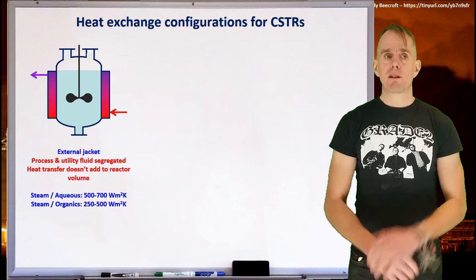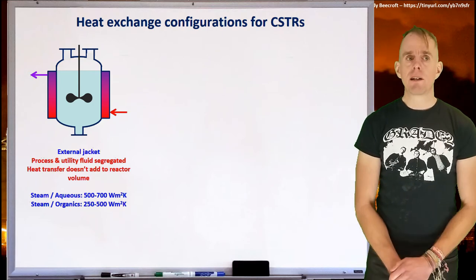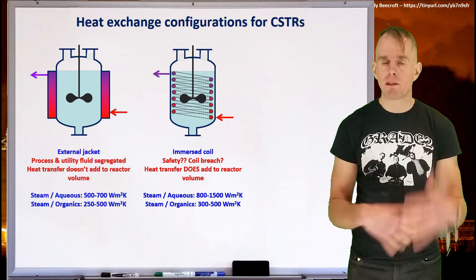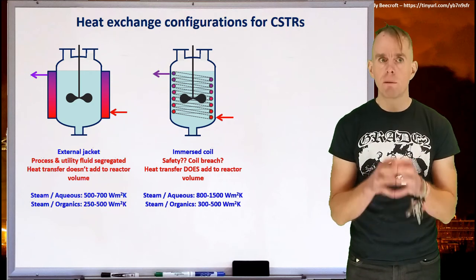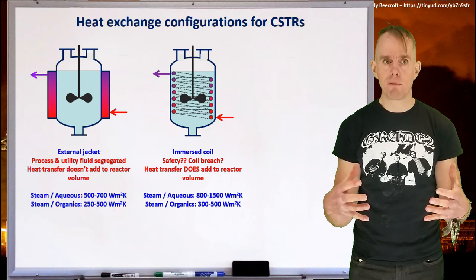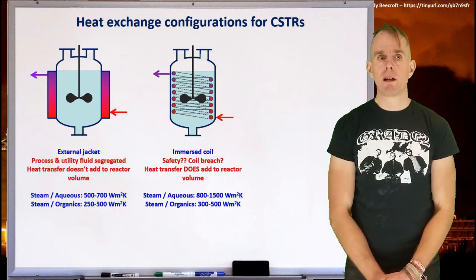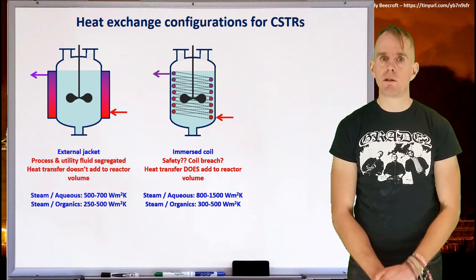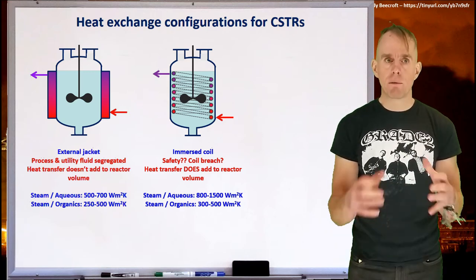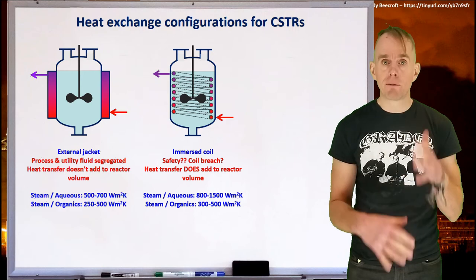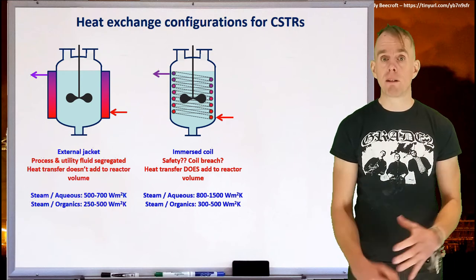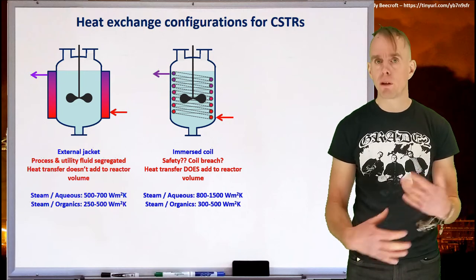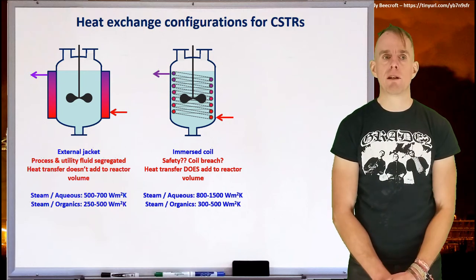If we think about the different configurations, in addition to having an external jacket, you could have internal heating coils. Now, here we're back to the scenario where you do have your heat transfer equipment taking up pressure vessel volume. And you also have the safety worry about what happens if you get a coil breach. Again, if you get your reactant contacting your utility, what happens not only within the reactor, but in terms of upstream and downstream equipment as well, bearing in mind that your utility and your reactor may be at different pressure levels. And we'll be talking more about that when we talk about pressure safety in a future lecture.